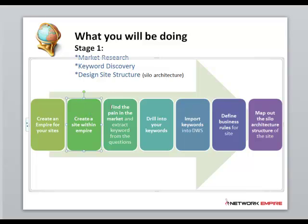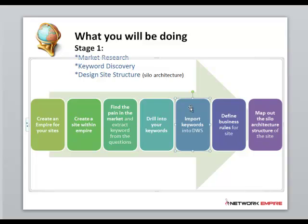The next thing we're going to do is our Market Discovery or Market Research. We're going to go to the market and find the pains in the market. Once we understand what the pains are, they are usually accompanied by a question. We'll look at that question and extract keywords out of those questions to give us the primary keywords that we want to drill into. We'll drill into keywords using the keyword tools of choice and build up lists of keywords that we can actually import into DWS.